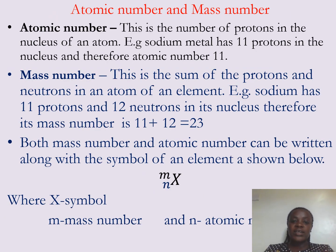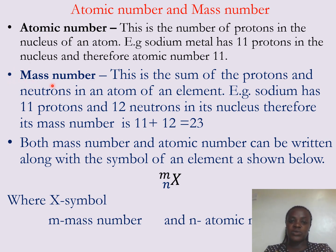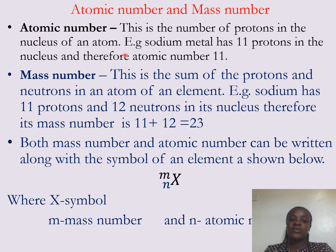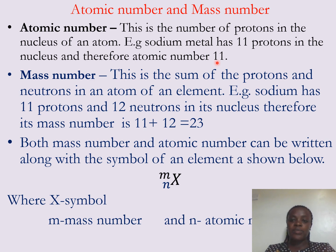We are now going to look at the atomic number and the mass number. The atomic number is the number of protons in the nucleus of an atom. For example, sodium has 11 protons in its nucleus, therefore the atomic number of sodium is 11.